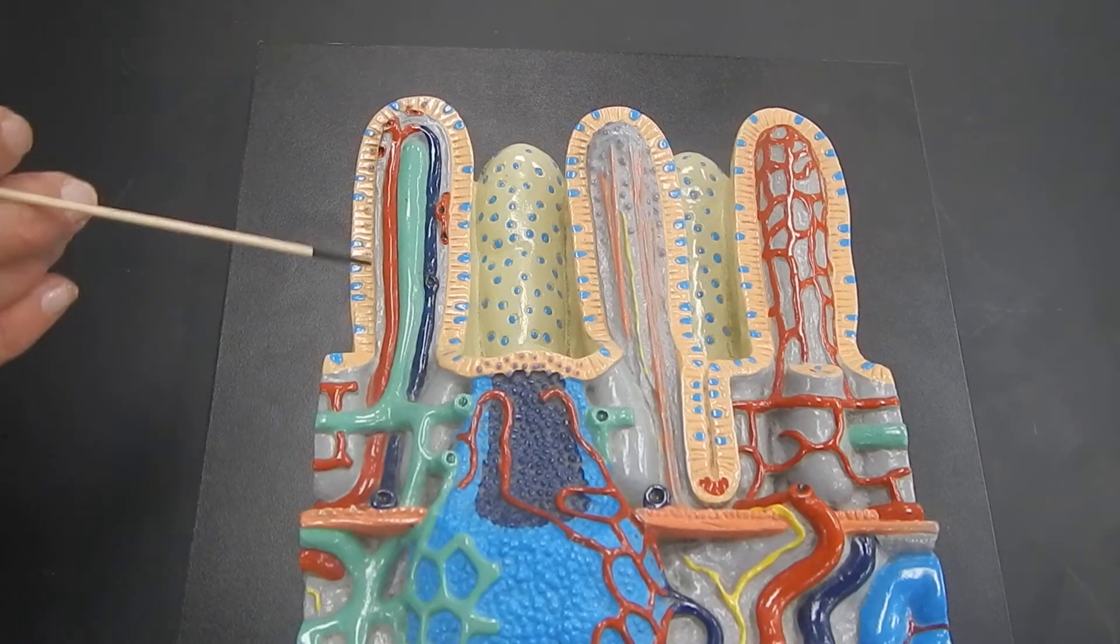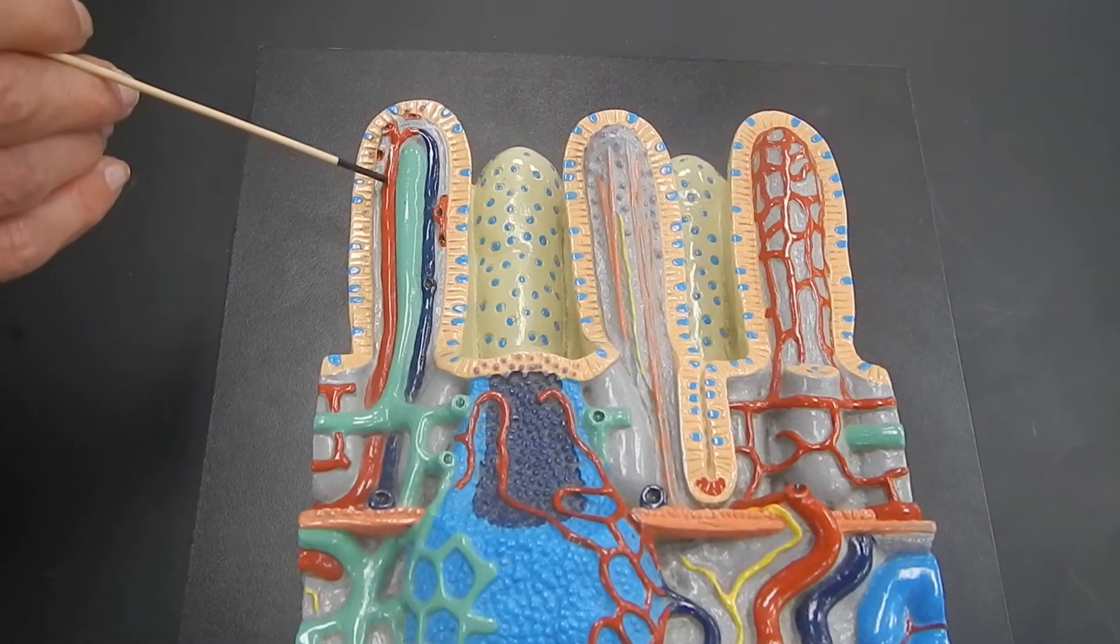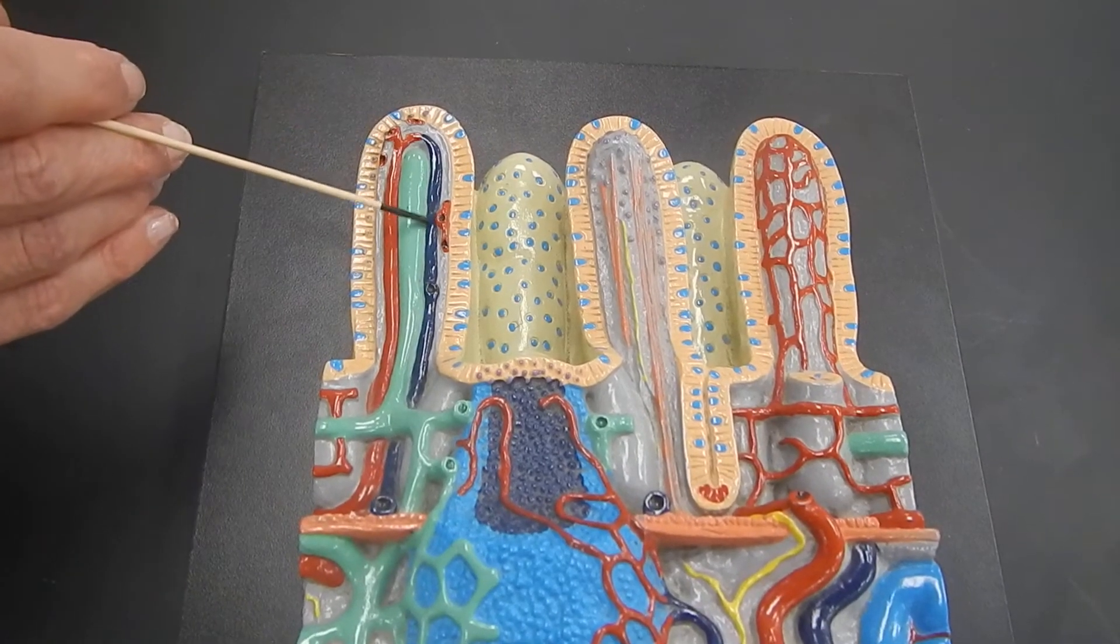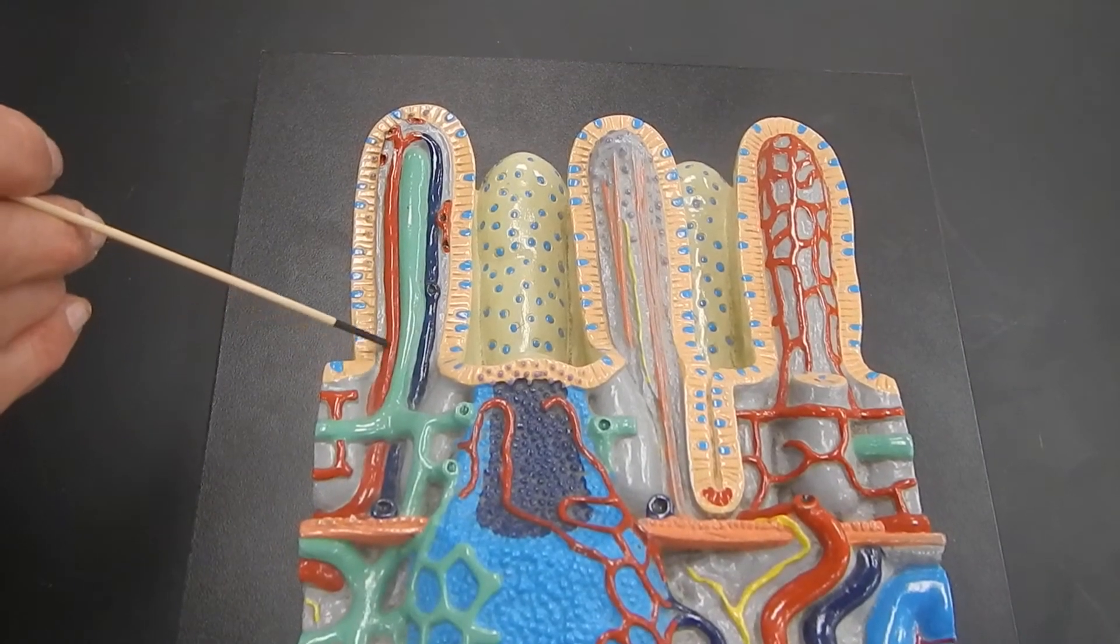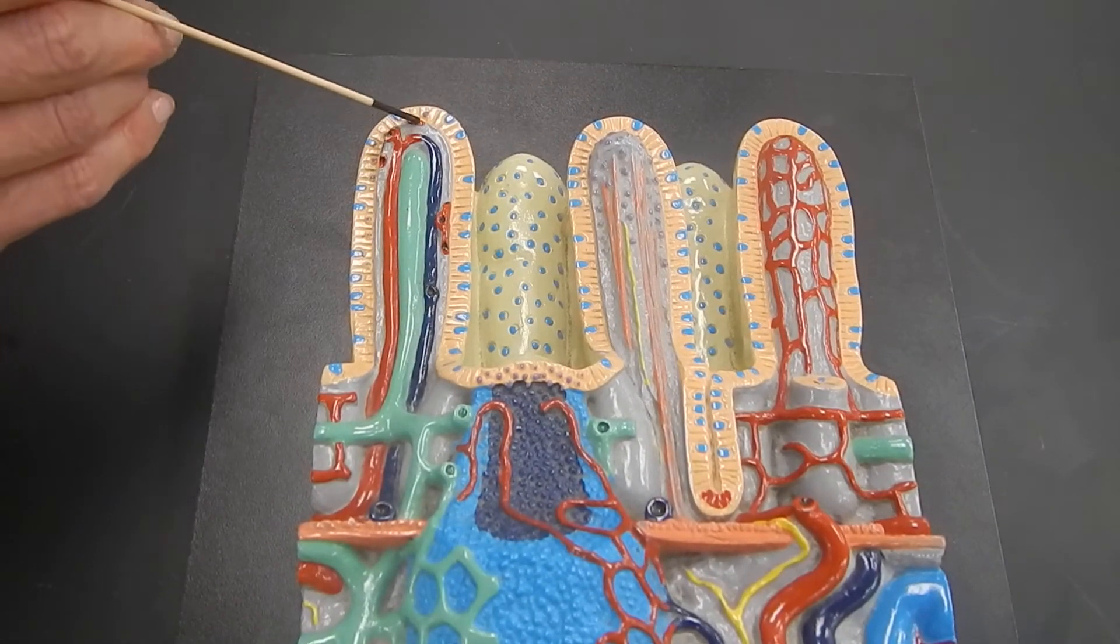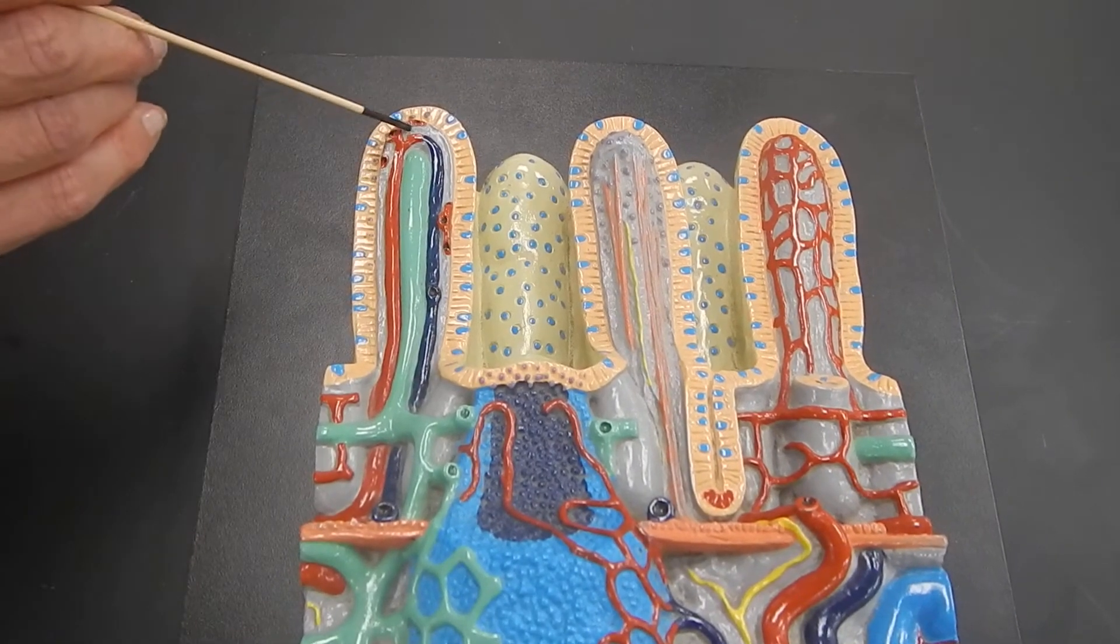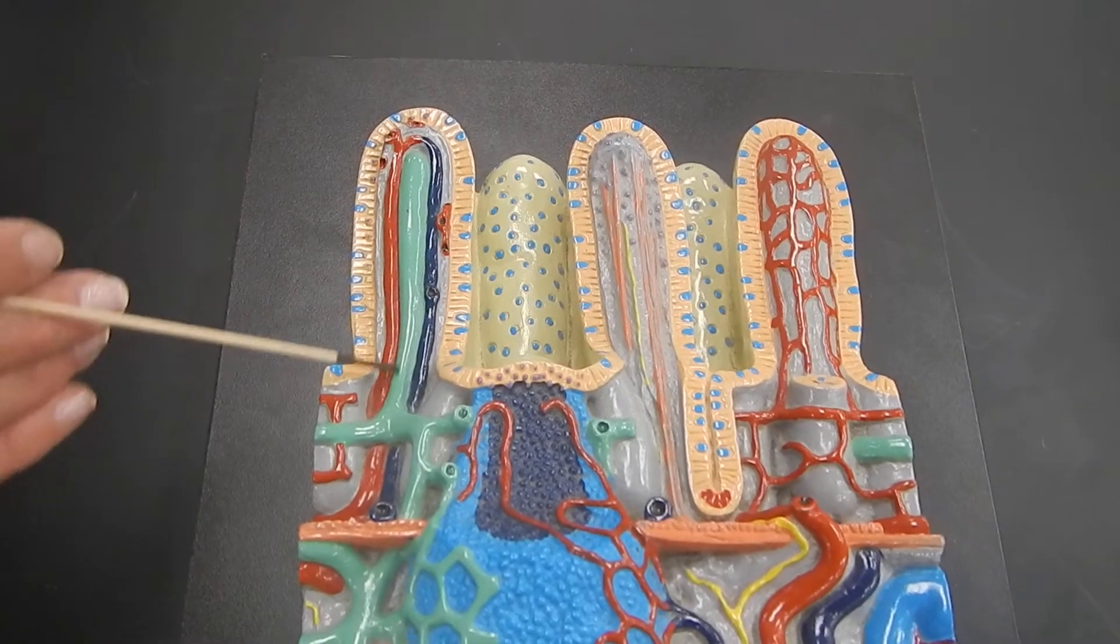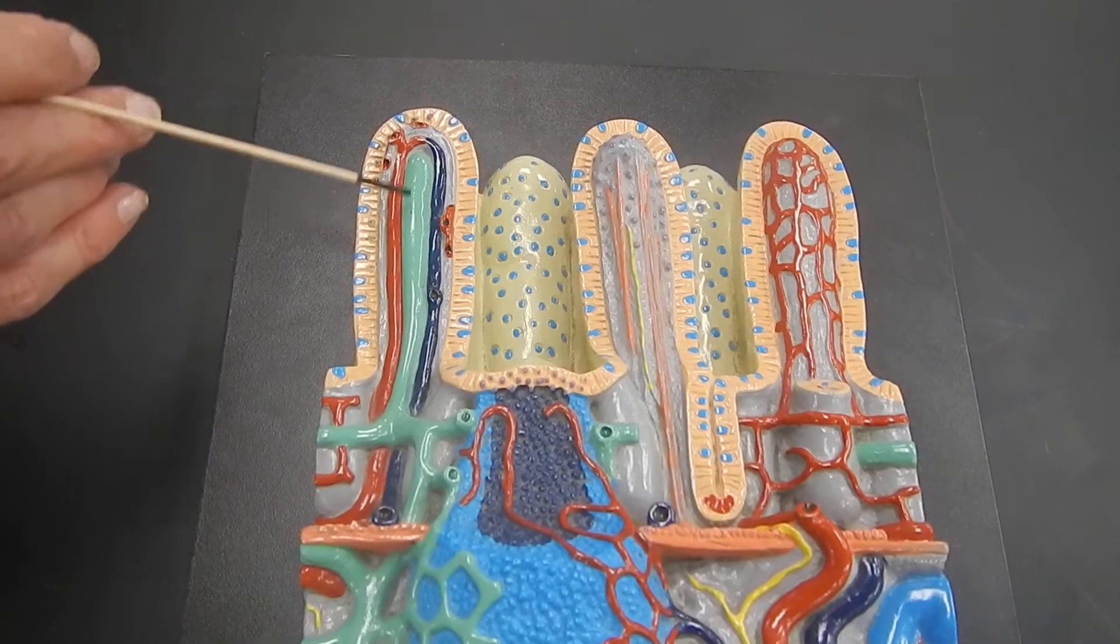Inside of each villus, there is a capillary with very well oxygenated blood going in, and blood that has lost its oxygen coming out. And all of the carbohydrates and amino acids that are absorbed from your food are going to get absorbed directly into the bloodstream. So this green structure right in the center of every villus, not just this one, but every villus.